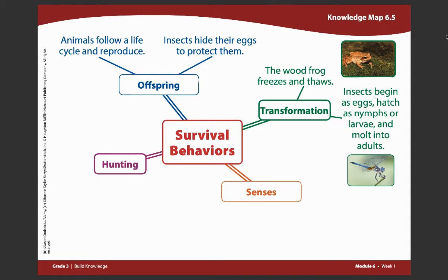Now that you've written that sentence into your knowledge map, let's think about the story This Is Your Life Cycle that we read about dragonflies. In the same transformation category, let's write down: insects begin as eggs, hatch as nymphs or larvae, and molt into adults. This is the transformation cycle of dragonflies. Pause the video to write down this information in your knowledge map.